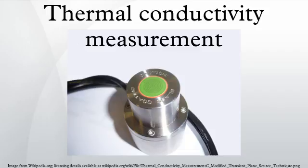Time domain thermoreflectance is a method by which the thermal properties of a material can be measured, most importantly thermal conductivity. This method can be applied most notably to thin film materials, which have properties that vary greatly compared to the same materials in bulk. Once a material is heated up, the change in the reflectance of the surface can be utilized to derive the thermal properties. The change in reflectivity is measured with respect to time, and the data received can be matched to a model containing coefficients that correspond to thermal properties.